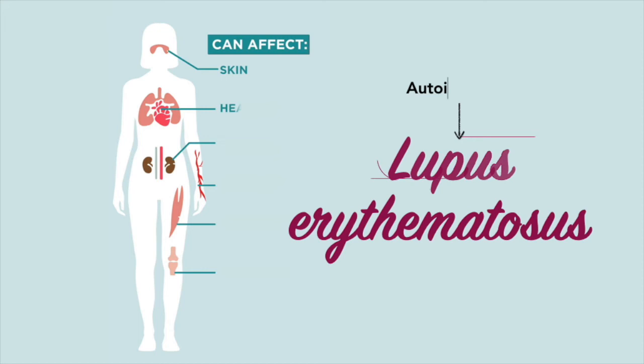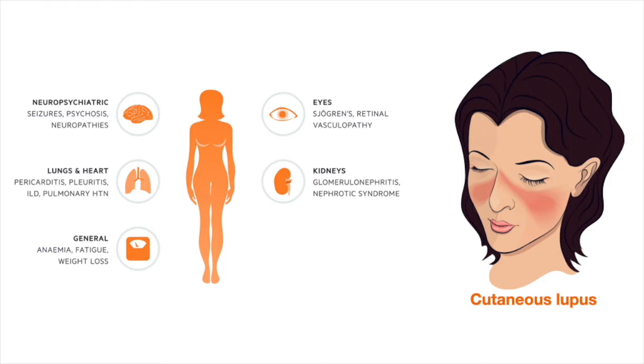Lupus erythematosus is the designation for a wide array of clinical illnesses linked together by distinct patterns of cellular and humoral autoimmunity. LE ranges from life-threatening manifestations of acute systemic LE to the limited and exclusive skin involvement in chronic cutaneous LE.